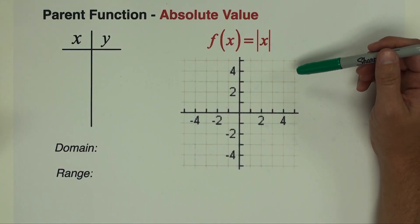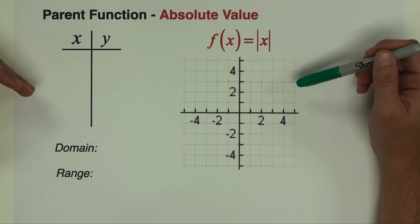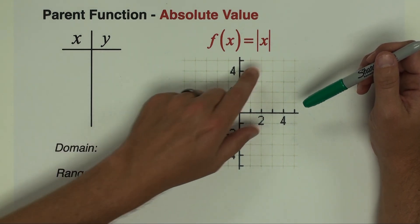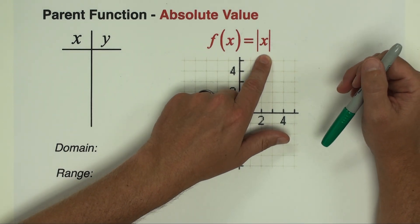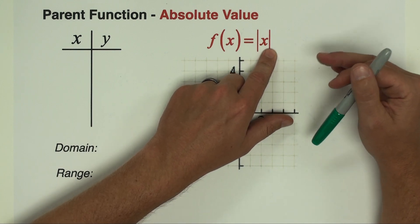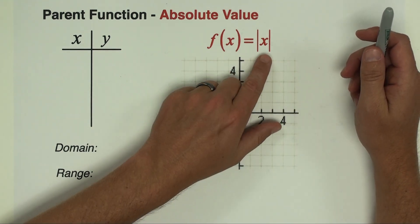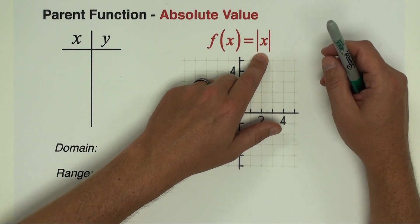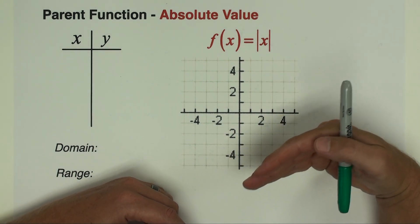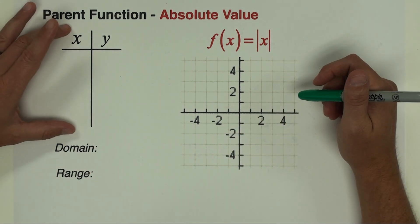Let's take a look at the absolute value function. We're going to begin with what we call the parent function — the most basic absolute value function. So we're just going to look at the absolute value of x. Later on we will be adding and subtracting numbers and multiplying by numbers, but for now, what does the absolute value of x look like? I like to explore new functions with a numerical investigation.